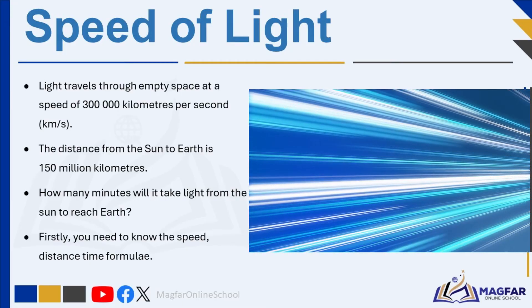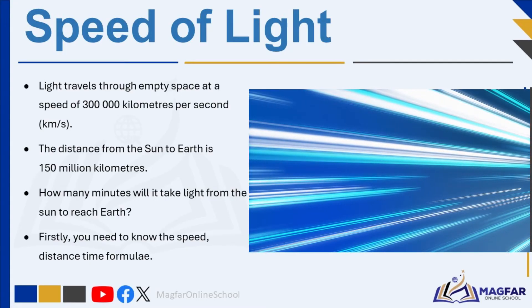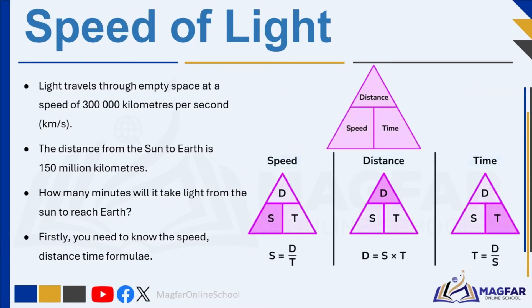How many minutes will it take light from the sun to reach earth? You need to know the distance-speed-time formula. The distance-speed-time triangle helps us: Distance is how far you need to travel, measured in km. Speed tells you how fast you're moving, measured in km per hour or km per second. Time is how long it takes to travel the distance, measured in hours, minutes, or seconds. To use the triangle, cover up the variable you want to find, and you're left with the formula: speed equals distance divided by time; distance equals speed times time; time equals distance divided by speed.